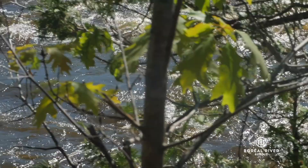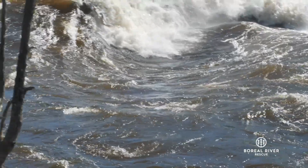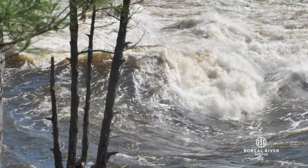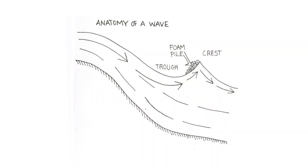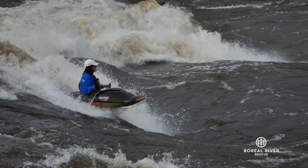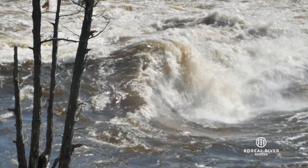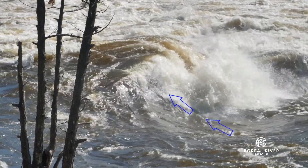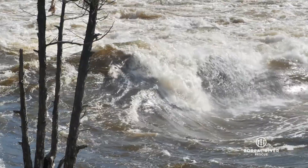Two features that may look similar to the untrained eye but act very differently are crashing waves versus holes. A crashing wave is a wave that's steep enough at the crest that some water crashes back upstream. This creates a foam pile that on the surface can look like the backwash of a hole. Sometimes really buoyant objects like boats can stay surfing in the foam pile with gravity and the crashing water keeping them on the upstream side of the wave. But there's a big difference below the surface — just below the surface of a crashing wave, all the water is moving downstream. This means that anything that sinks down a bit below the surface will be pushed downstream and free of the wave.